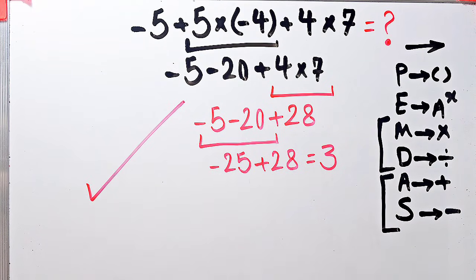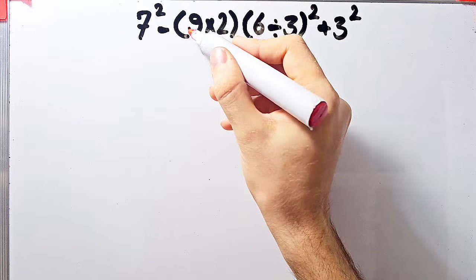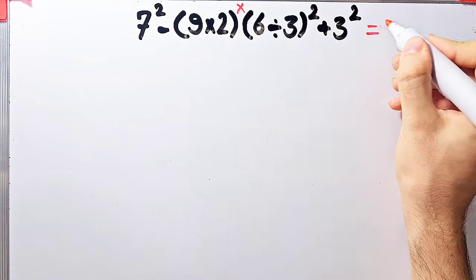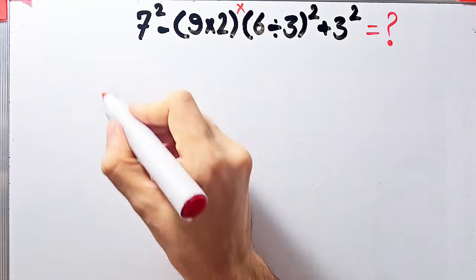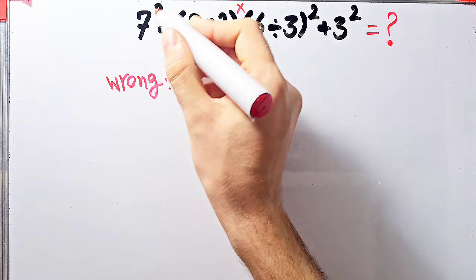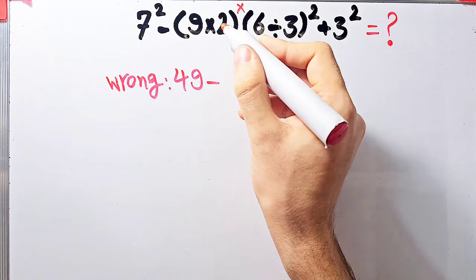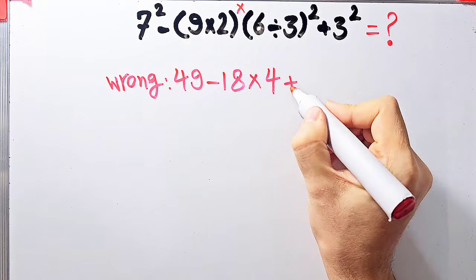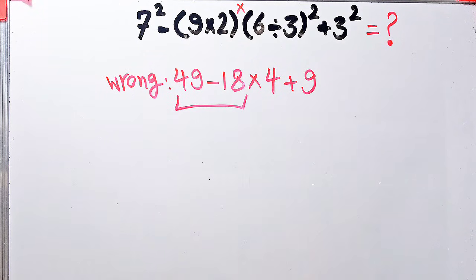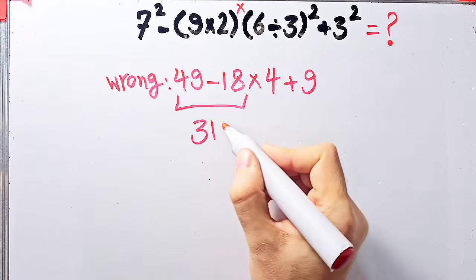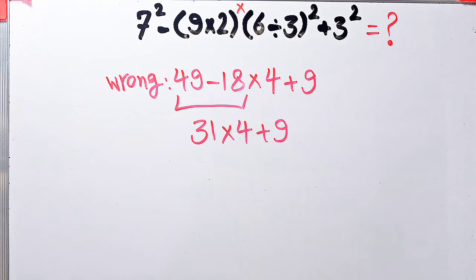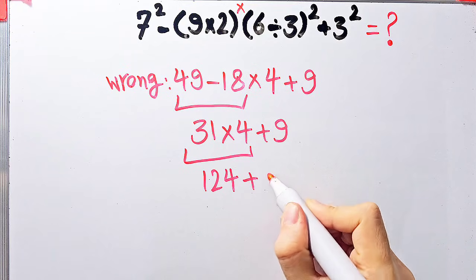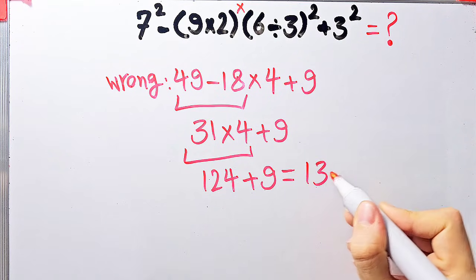Let's solve another question: 7 to the power of 2, minus open parentheses 9 times 2 close parentheses, times open parentheses 6 divided by 3 close parentheses to the power of 2, plus 3 to the power of 2. Some people solve it incorrectly: 7² equals 49, 49 minus 9 times 2 equals 18, times 6 divided by 3 equals 2, 2² equals 4, then 49 minus 18 equals 31, 31 times 4 equals 124, 124 plus 9 equals 133 — but this is definitely wrong.